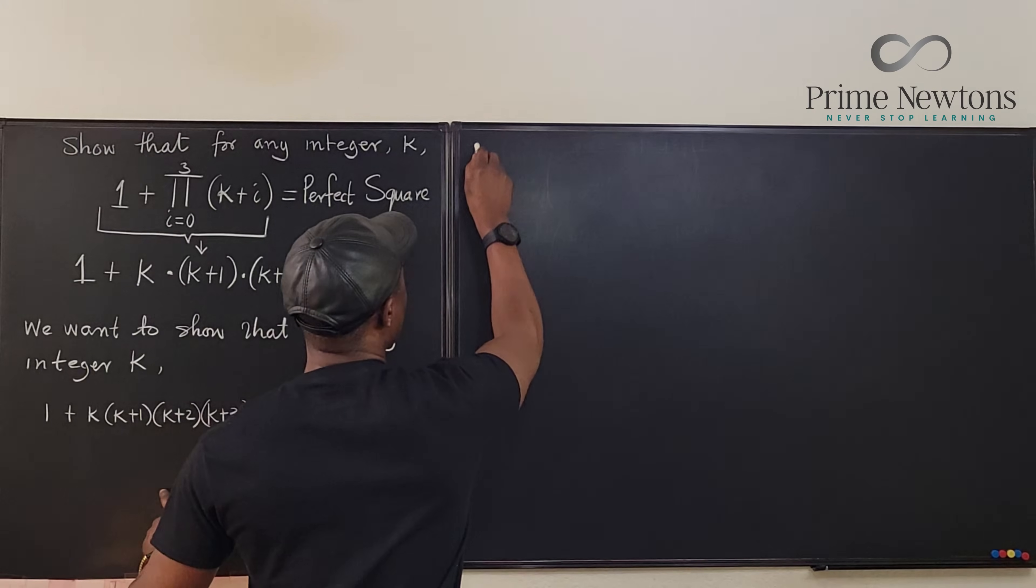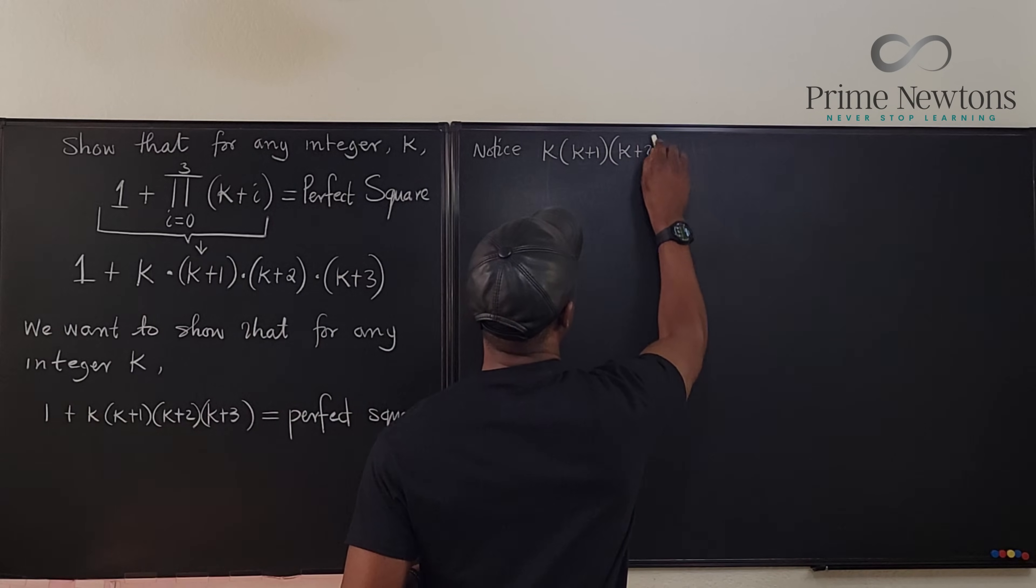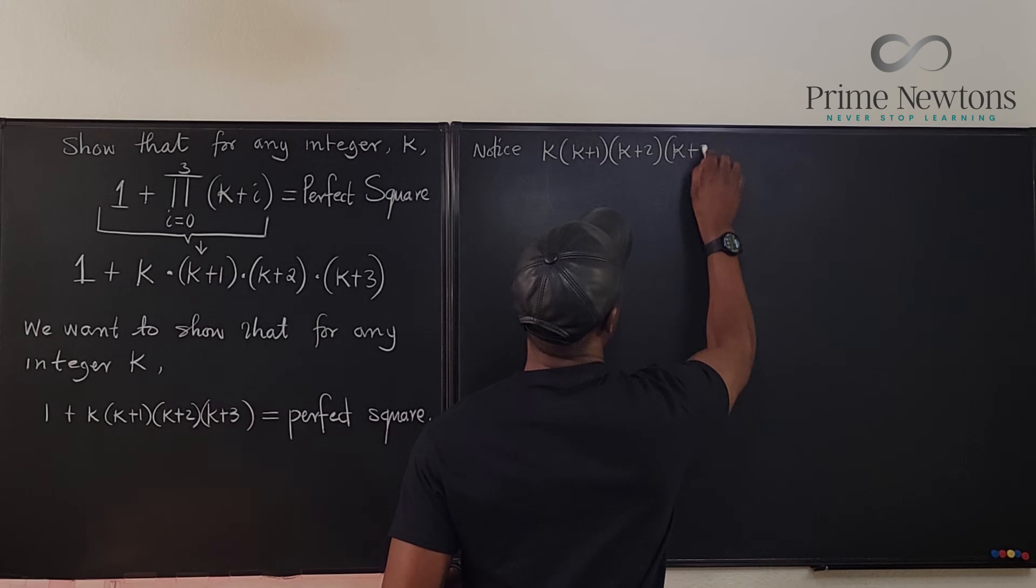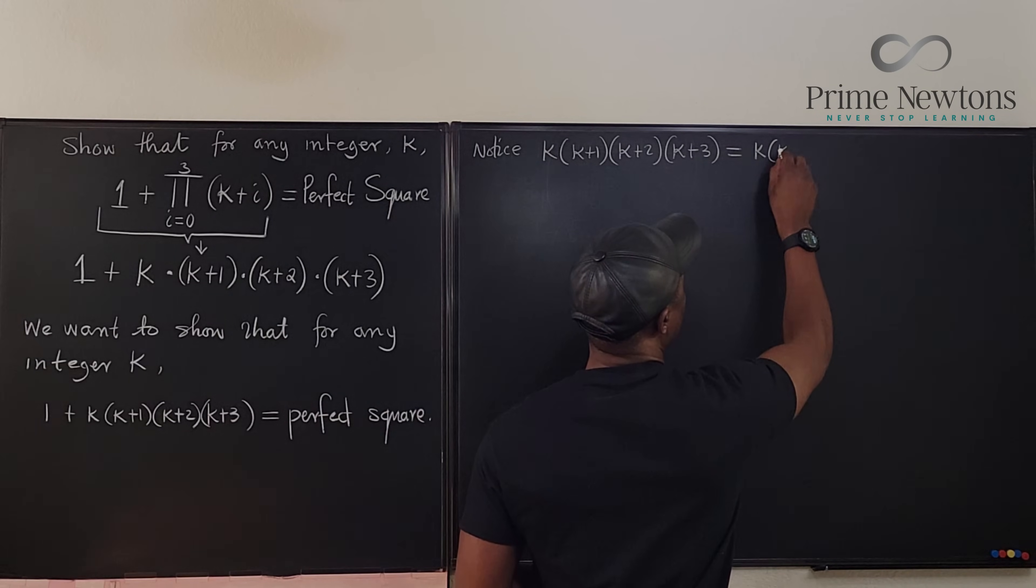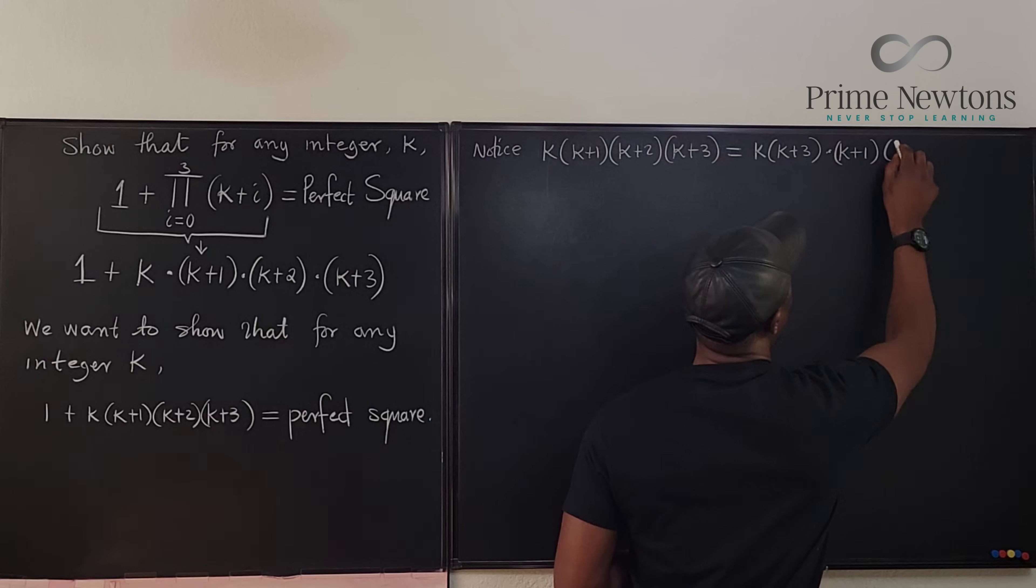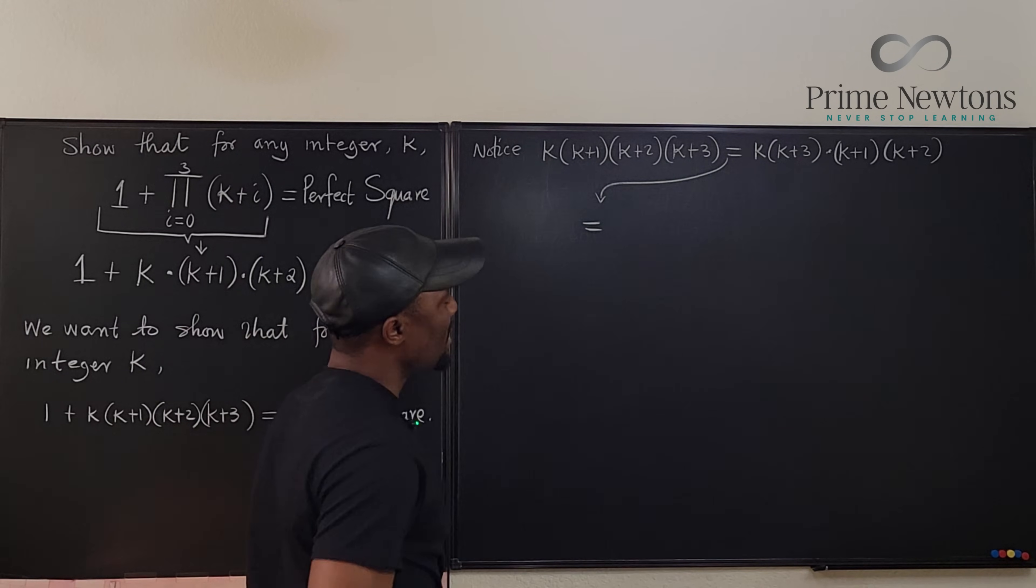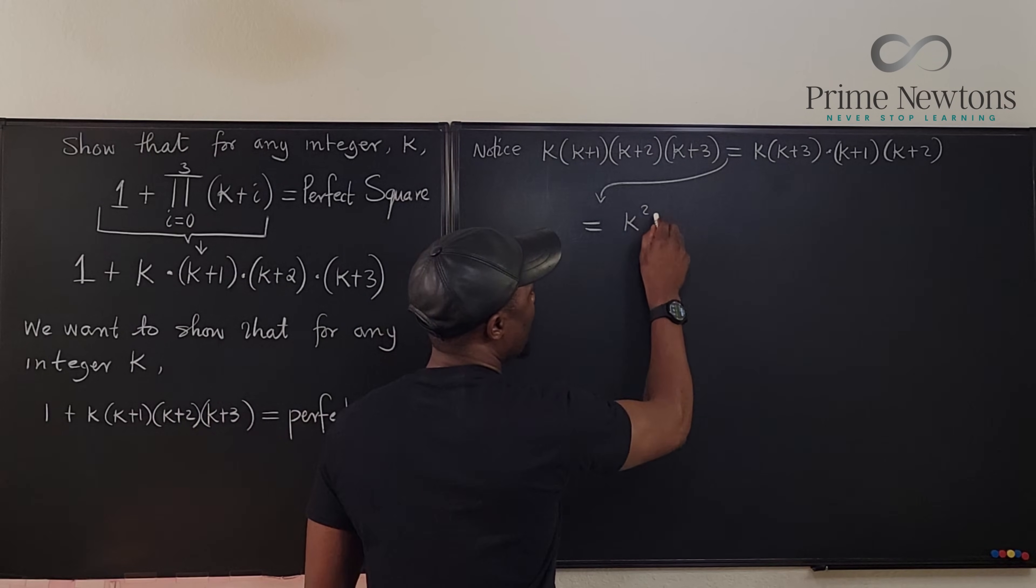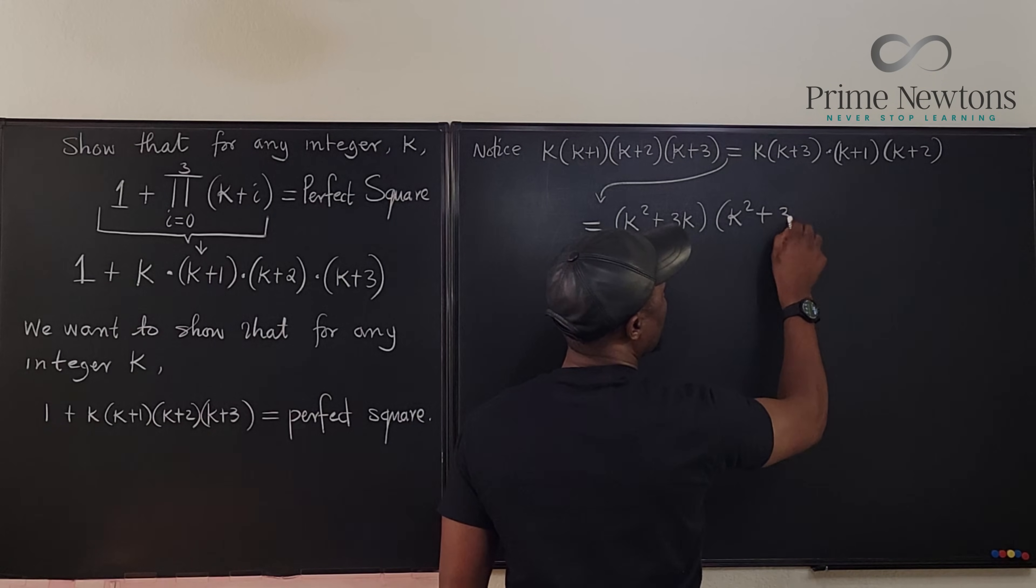What we're going to say is notice that k times k plus one times k plus two times k plus three will be equal to, if I multiply this by this, let's write it as k into k plus three and then multiply the two in the middle times k plus one times k plus two. Let's pull this down here so that this would be equal to k squared plus three k, and here I'm going to have k squared plus three k plus two.